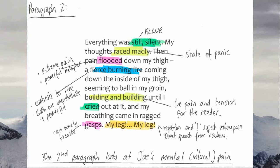He says 'a fierce burning fire coming down the inside of my thigh' — this contrasts to the water imagery. Throughout the extract, metaphors to do with fire, water, and ice are used. The fierce burning fire suggests the pain is raging and horrendous. Both water and fire are uncontrollable and powerful — that's how Joe compares his pain. Then the pain 'builds and builds' — the tension is building for the reader too, and we know there must be a climax. Then 'my leg... my leg' with ellipsis — the repetition suggests extreme pain. It almost feels like direct speech, like Joe is talking directly to the reader.